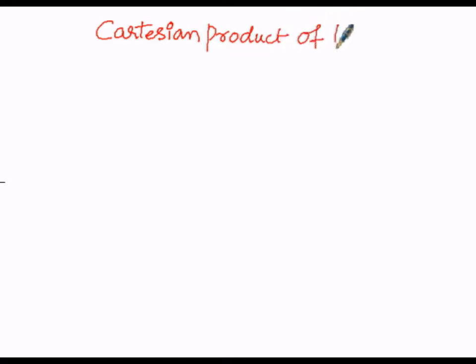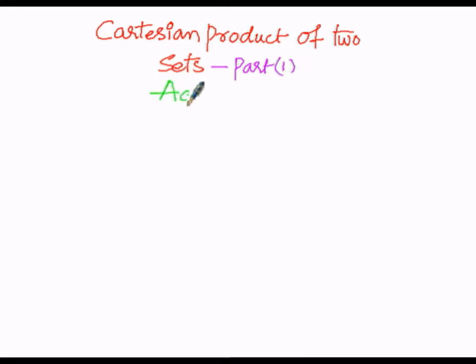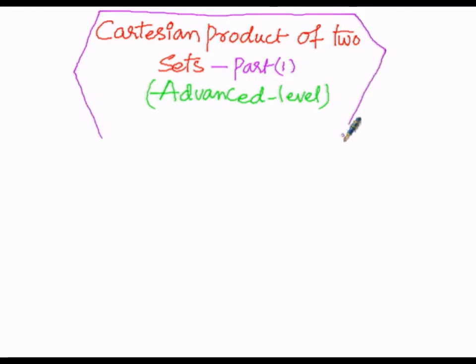We are going to discuss the Cartesian product of two sets, part one, at the advance level. We assume two sets A and B. The Cartesian product is denoted as A cross B, and the elements of A cross B can be described by means of three ways: one, the arrow diagram; two, the tree diagram; and three, the graphical representation.